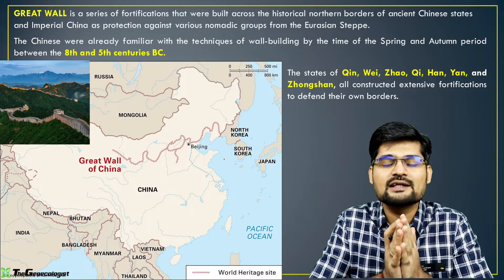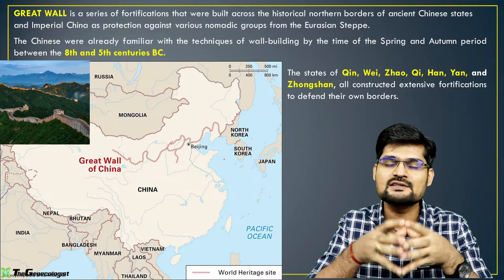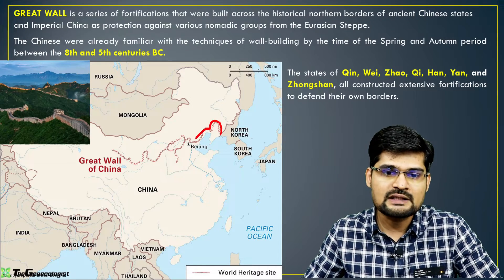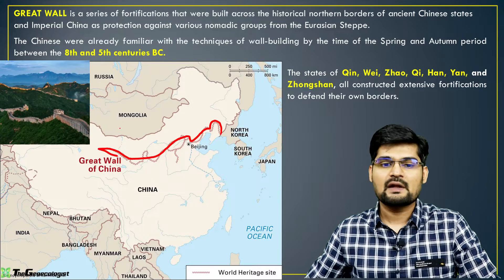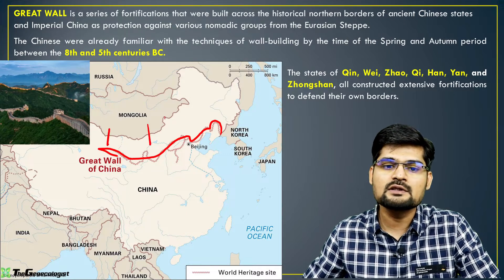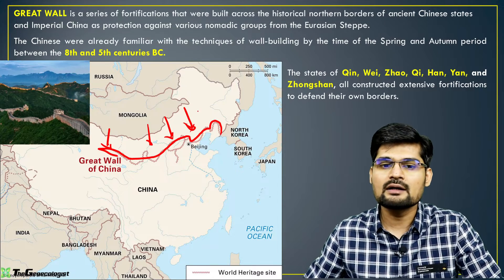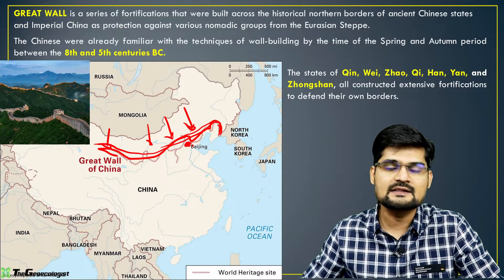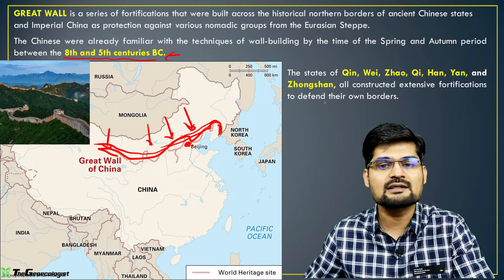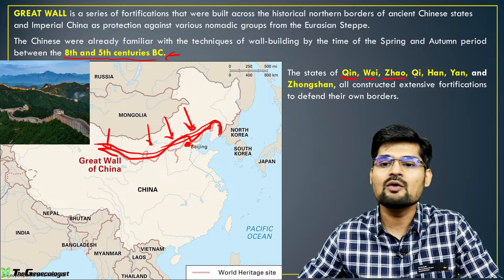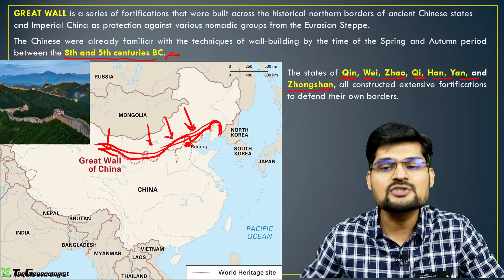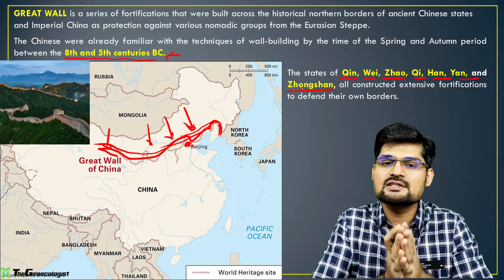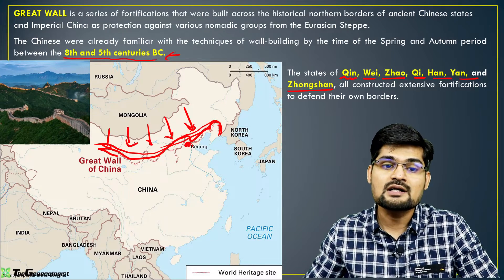Let's observe the Great Wall of China, one of the outstanding features that is a UNESCO World Heritage Site and one of the wonders of the world. This wall was built to protect the Han Chinese from attacks from northern Mongolian tribes. It extends from Beijing and was mostly constructed from the 8th to 5th centuries BC by dynasties including Qin, Wei, Zhao, Qi, Han, Yan, and Zhongshan. It is a massive human-made feature covering a huge area in China.